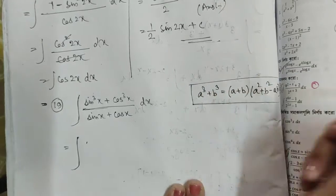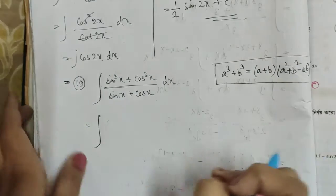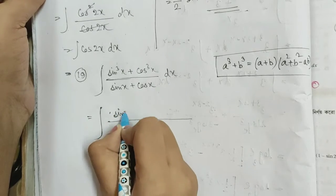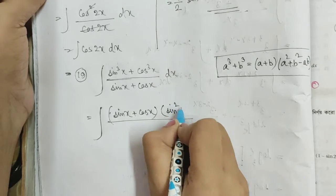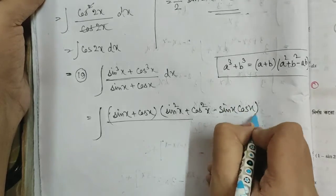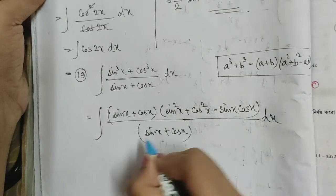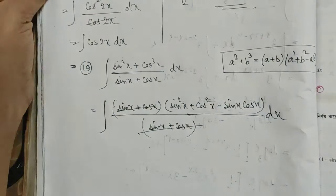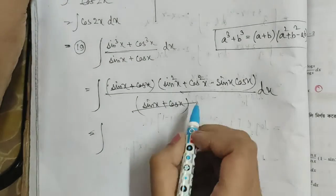The A³ plus B³ formula — let's recall that formula. It is quite simple. I already told you — keep in mind sin, cos, and the standard formula. sin squared plus cos squared equals 1.